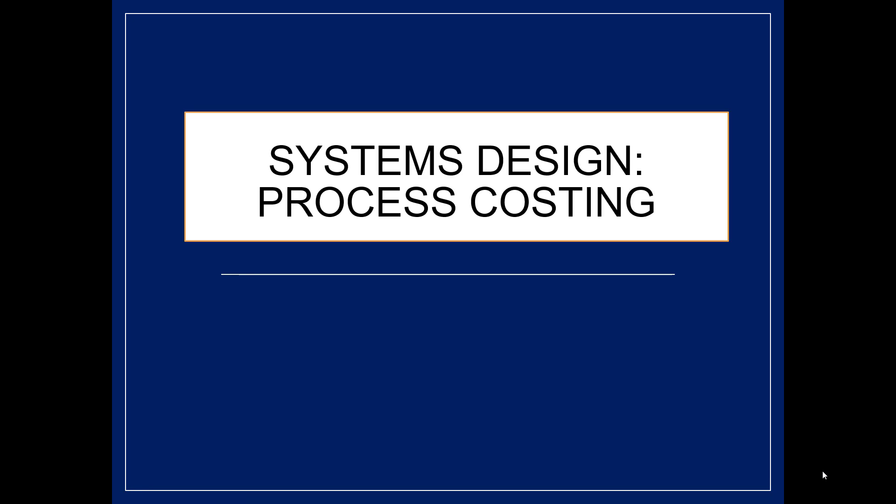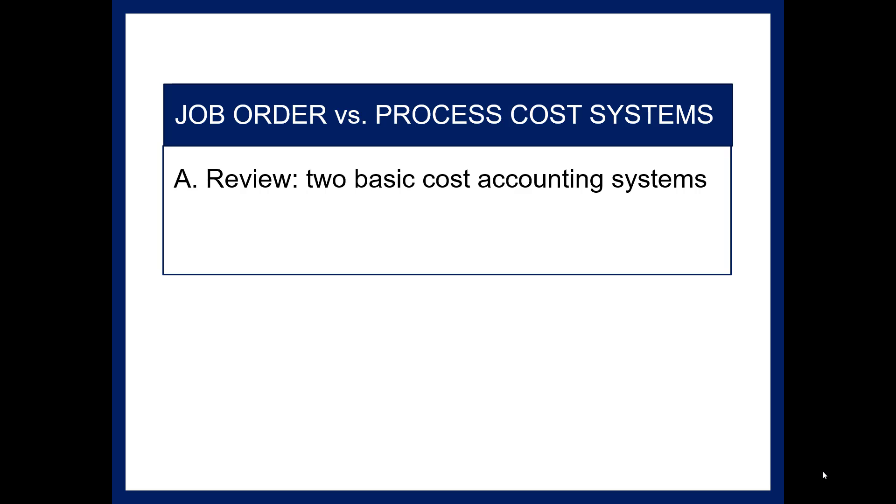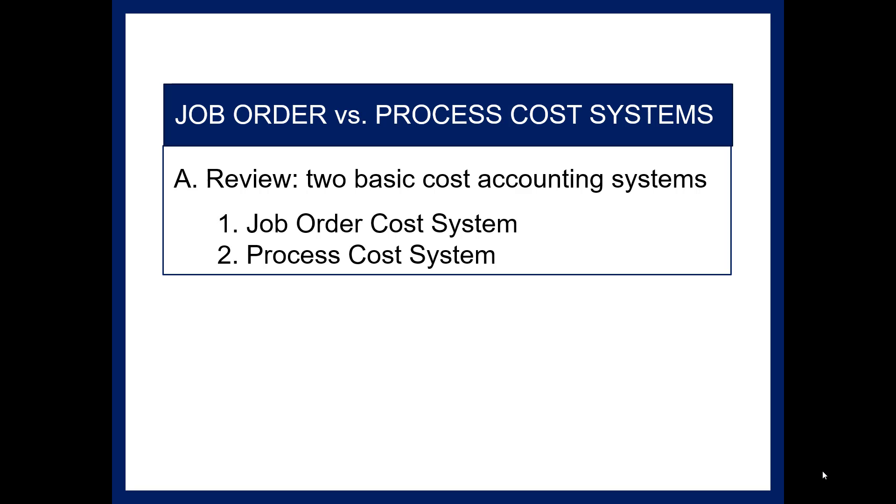As we've seen, some manufacturers make unique products such as aircraft or made-to-order furniture and they use a job order cost system. Other manufacturers mass produce large numbers of similar or identical items such as soft drinks or boxes of cereal. For mass production, process costing is the costing system used to assign cost to inventory. So there are two basic costing systems: job order cost system and process cost system.